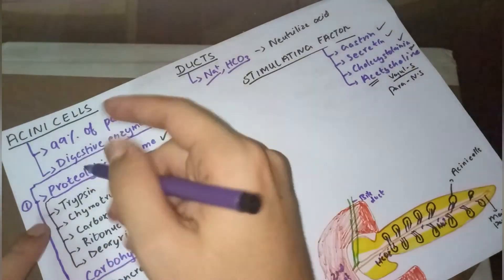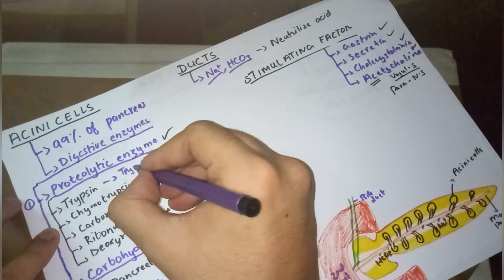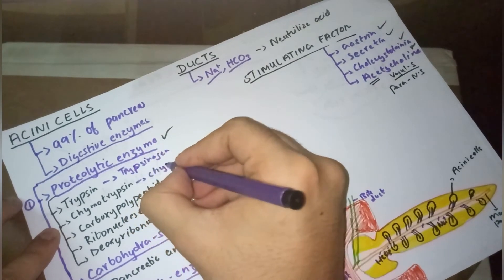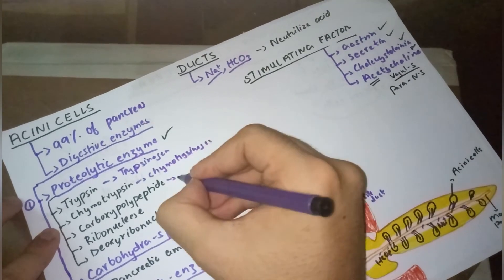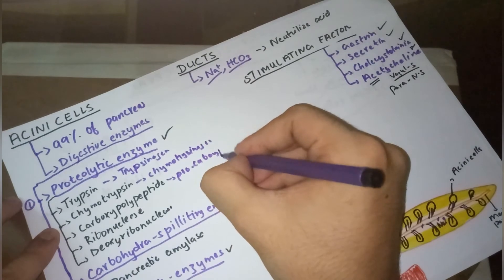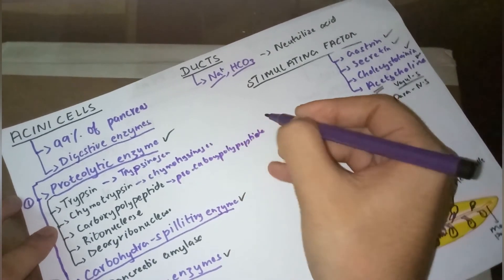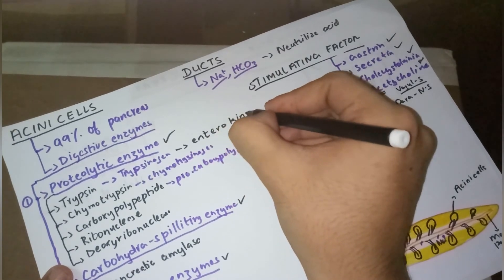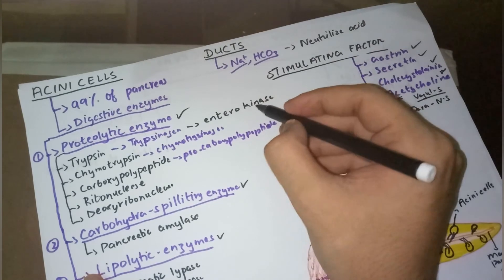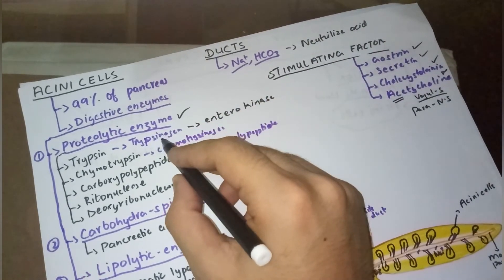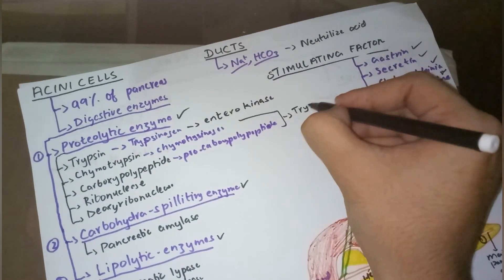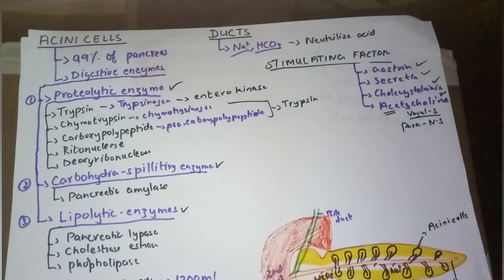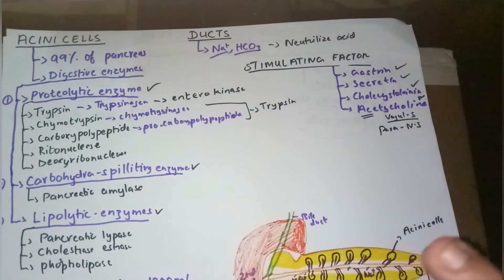Trypsin is normally secreted in an inactive form called trypsinogen. Chymotrypsin is secreted as chymotrypsinogen, and carboxypeptidase is secreted as procarboxypeptidase. When these go into the intestine, the intestine secretes enterokinase, which converts trypsinogen to trypsin. Trypsin then converts chymotrypsinogen and procarboxypeptidase into their active forms. All other enzymes are already in their active form.